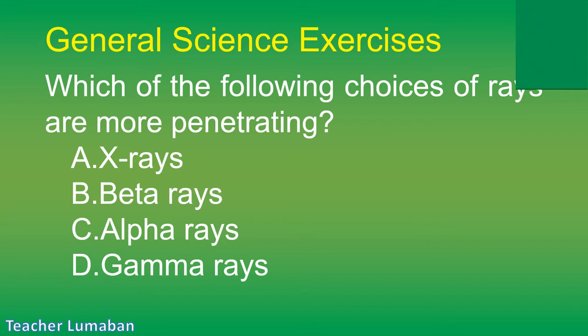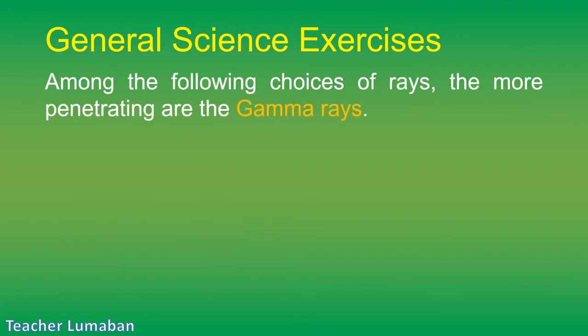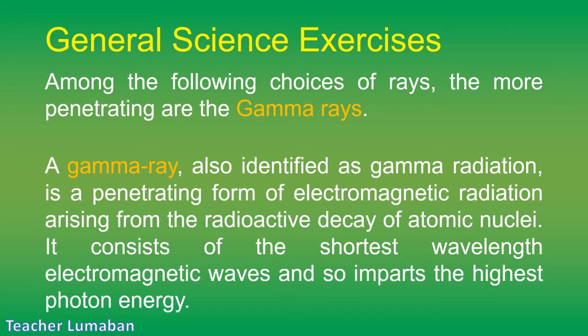The correct answer is Letter D: gamma rays. Among the following choices of rays, the more penetrating are the gamma rays. A gamma ray, also identified as gamma radiation, is a penetrating form of electromagnetic radiation arising from the radioactive decay of atomic nuclei. It consists of the shortest wavelength electromagnetic waves and so imparts the highest photon energy.